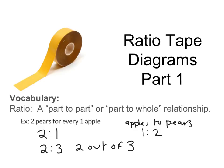Instead of using the colon — the two little dots — we could also write it as two to one using the word 'to' instead of the colon. We can also express these as a fraction, but we'll talk about that more in later videos.